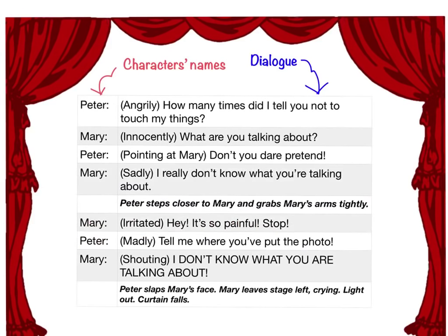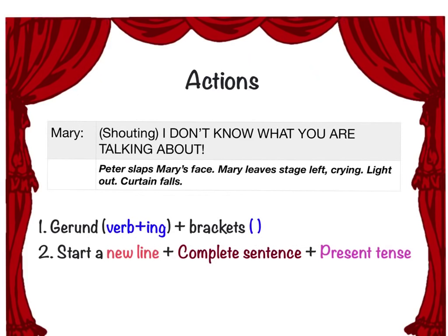Once you've put down the title, character list, scene numbers, scene names, setting, and stage direction, you can start writing the dialogue. You should see a table in your assessment or play script writing pack. Put all the character names on one side of the table and all the dialogue on the other side. Do not write the character's name and dialogue together on one side — the character goes at one margin and the dialogue on the other side.